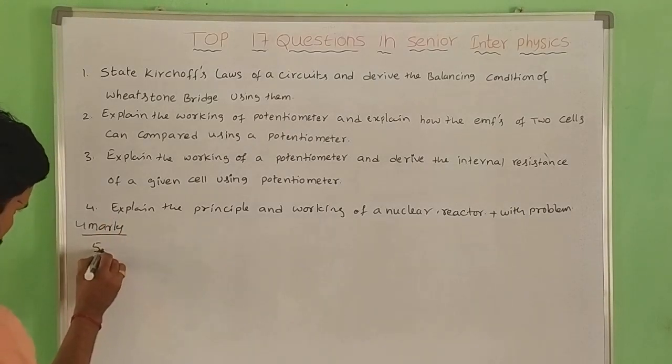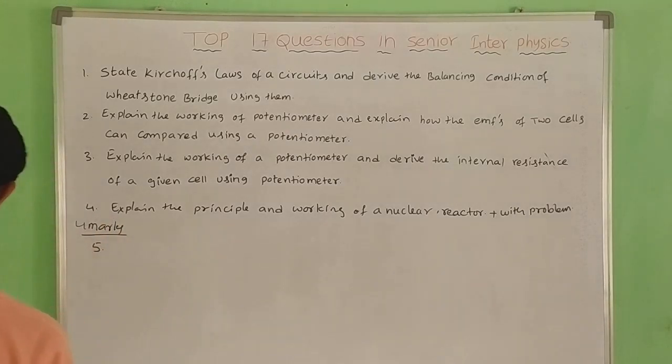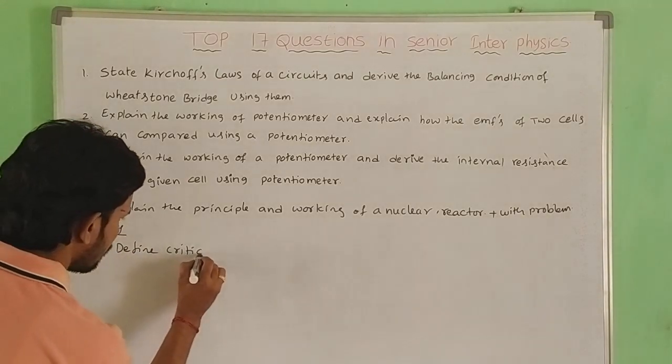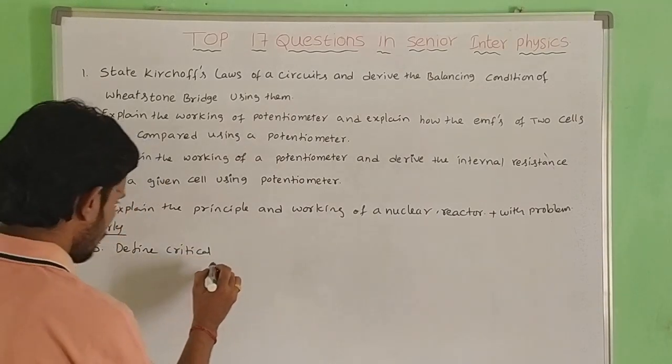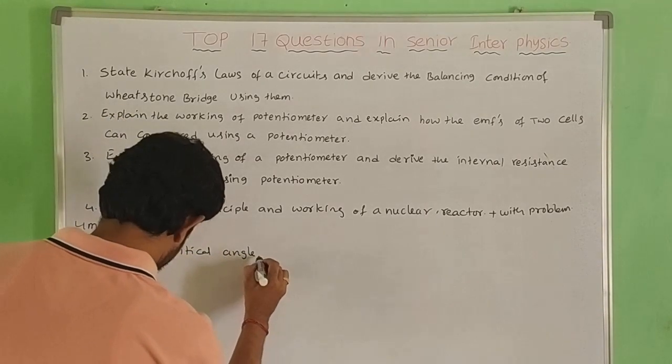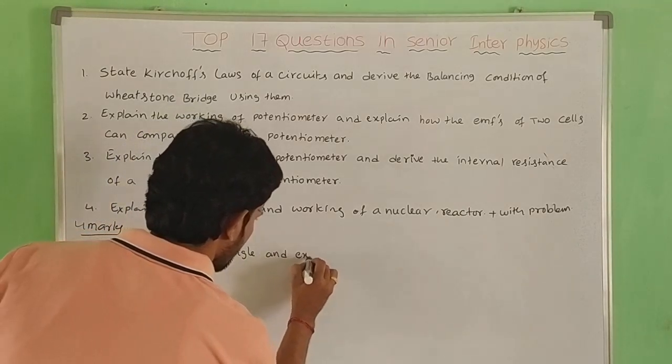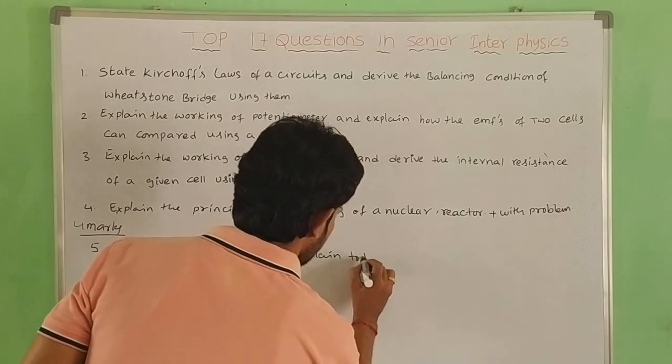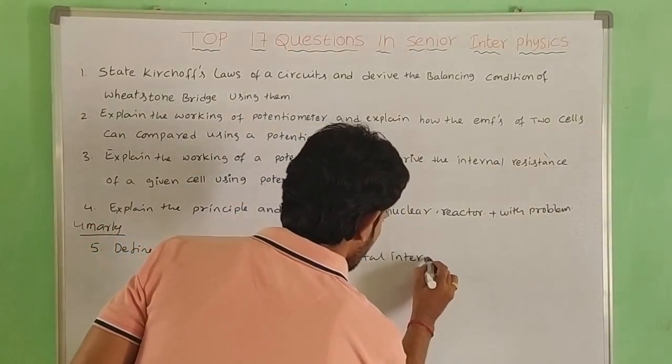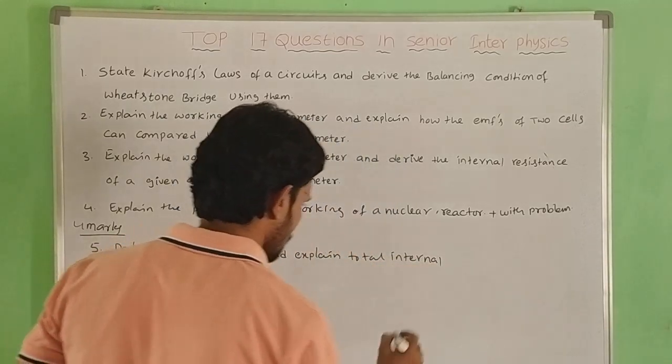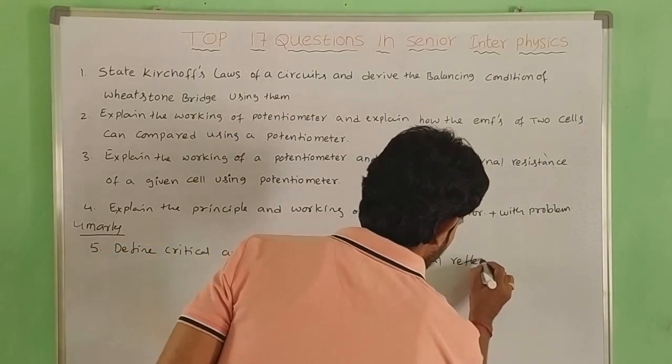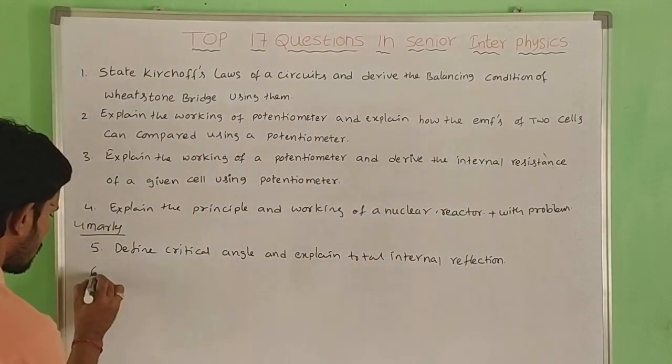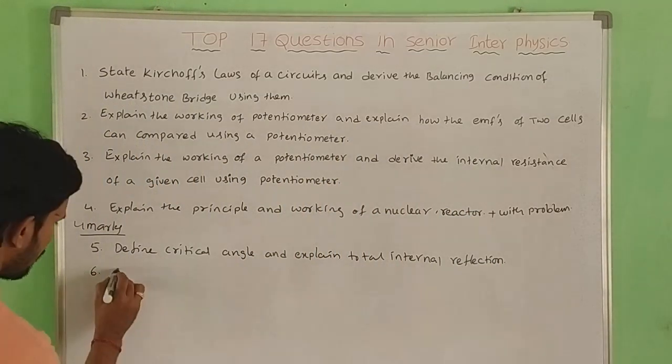Next, fifth one: Define critical angle and explain total internal reflection.